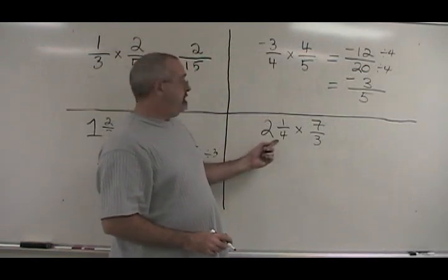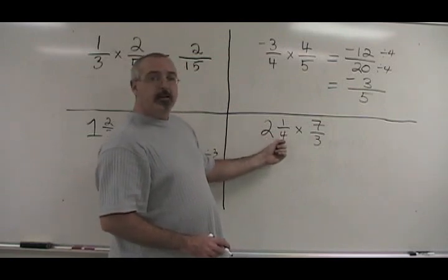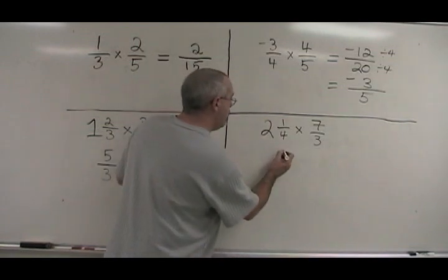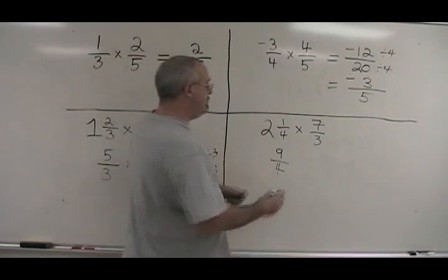Here's another one with a mixed number. Big number times denominator: 2 times 4, that's 8. Add that to the old numerator. 8 plus 1 is 9. We have 9 over 4. The denominator stays the same. Times 7 thirds.